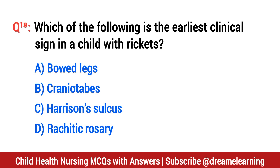Question number 18. Which of the following is the earliest clinical sign in a child with rickets? The right option is B: craniotabes.